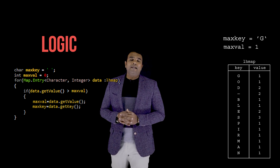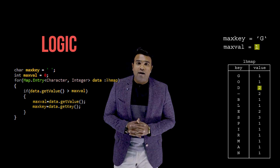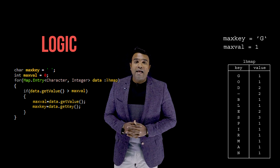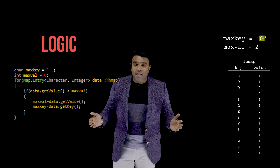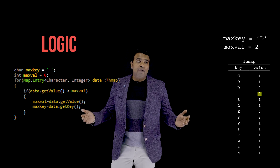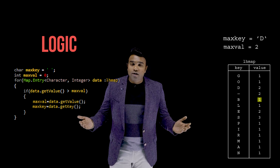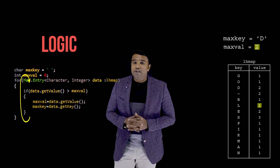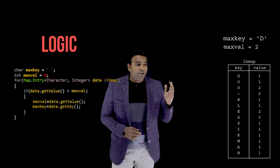The next data.getValue() returns 2, and since 2 is greater than 1, I enter the if-condition and update maxVal to 2 and maxKey to 'd'. Proceeding further, the next value is 2 — not greater than 2 — so I skip it. Then I encounter values of 1, 1, and 2 in sequence, none of which are greater than the current maxVal of 2, so I continue iterating without updating.